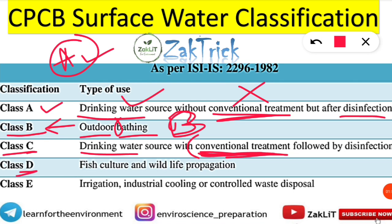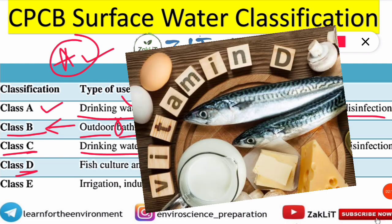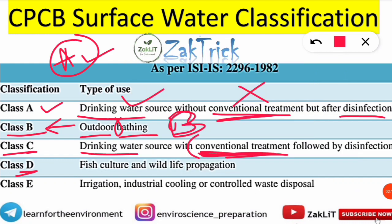Next is Class D. You should know that fish are a very major source of vitamin D — they are rich in vitamin D. So D means fish, vitamin D. Class D surface water can be used for fish culture and wildlife propagation.